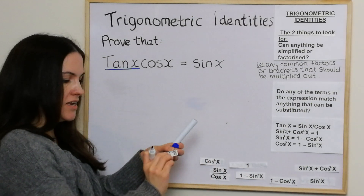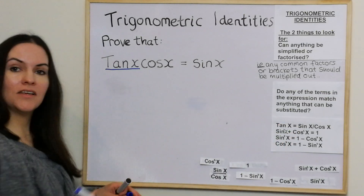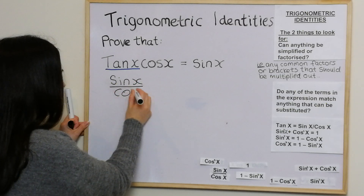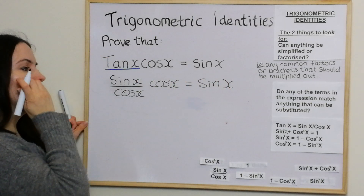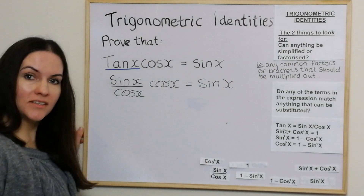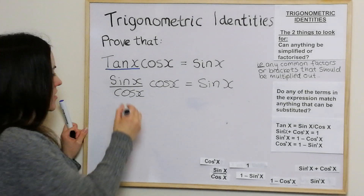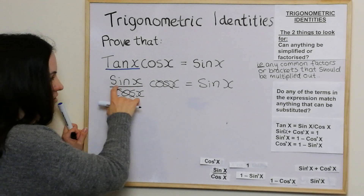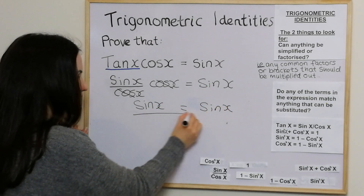On the other side, tan x = sin x / cos x. So this part is going to be replaced by sin x / cos x. That gives us (sin x / cos x) · cos x = sin x. Can anything be simplified? Well, we've got sin x divided by cos x and then multiplied by cos x, so those two cancel out. We're just left with sin x = sin x. That finishes that question.